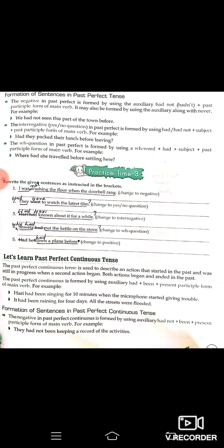'It had been raining for four days — all the streets were flooded' — chaar din se baarish ho rahi thi aur jitni bhi streets hain woh paani se bhar gayi hain. For the negative in past perfect continuous, we use 'had not been'. Example: 'They had not been keeping a record of the activities' — woh apni activities ka record nahi rakh pa rahe hain.